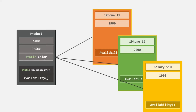Instead, we will have a single copy of this calc discount property for the class. Similarly, if we make the color property a static property, then instances created for this Product class will not have the color property. So now we don't have multiple copies of color or calc discount. Instead, we have only one copy of each. Now, you might ask: if we don't have calc discount and color on these instances, how can we access them?